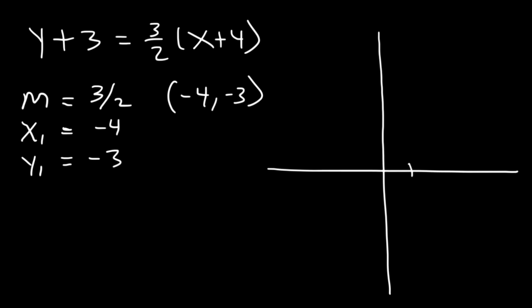So now we can go ahead and plot it. The first point is at negative 4, negative 3. And the slope is 3 over 2. 3 is the rise, 2 is the run.